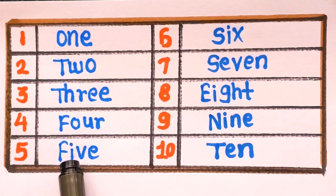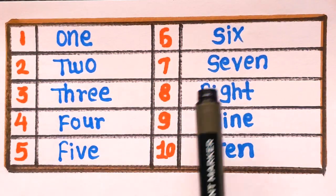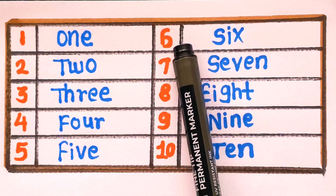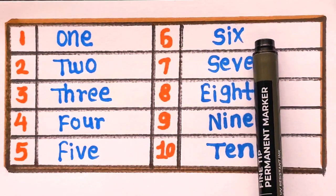Number 5. F-I-V-E. Five. Next is number 6. S-I-X. Six.